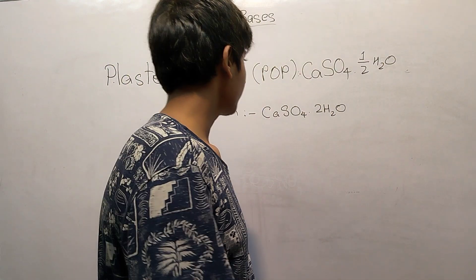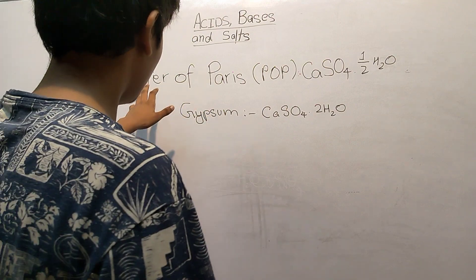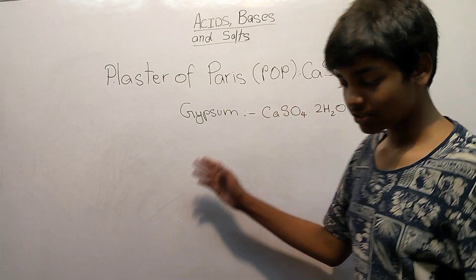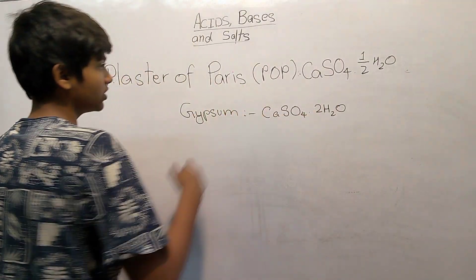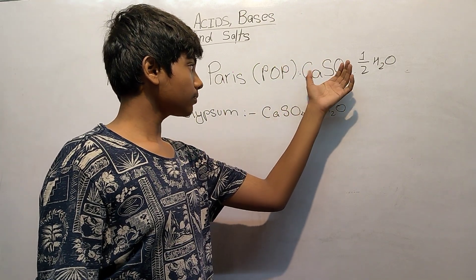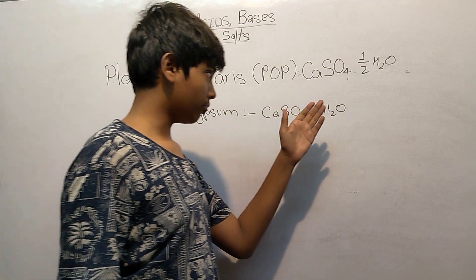Hello everyone, welcome back to Magadhyan Kindh. In this video we will be discussing the last topic of this chapter: Plaster of Paris, which is also known as POP. We write it in chemical formula as CaSO4·½H2O.